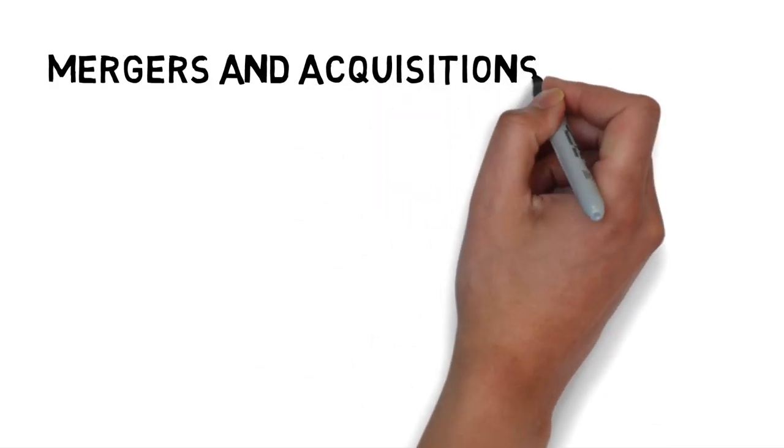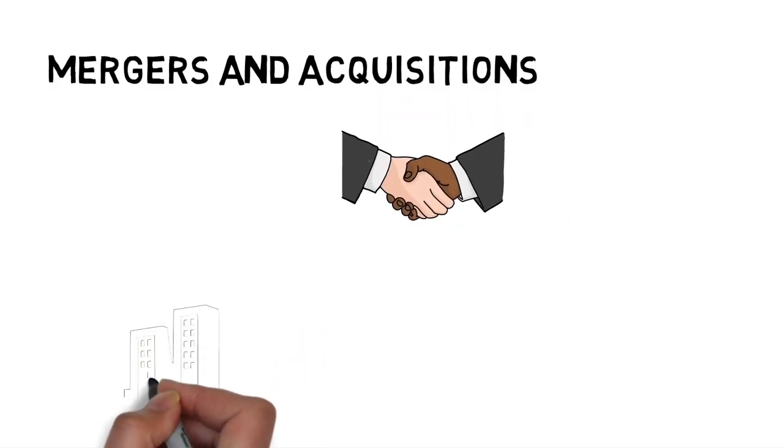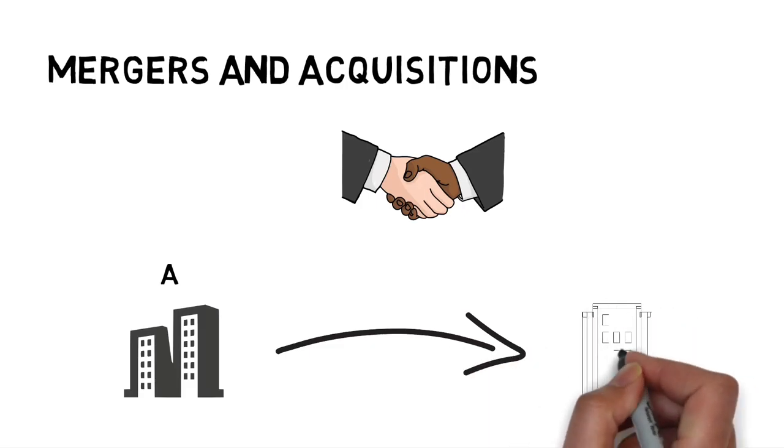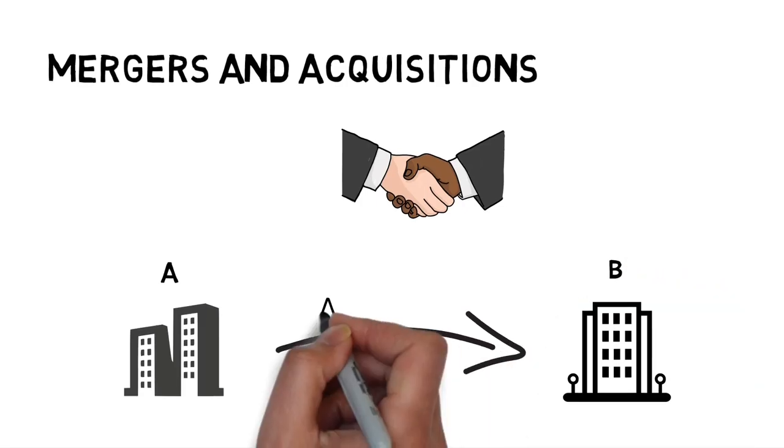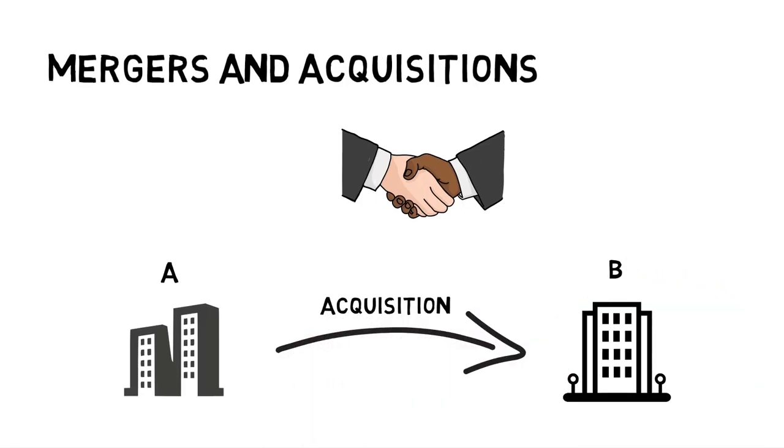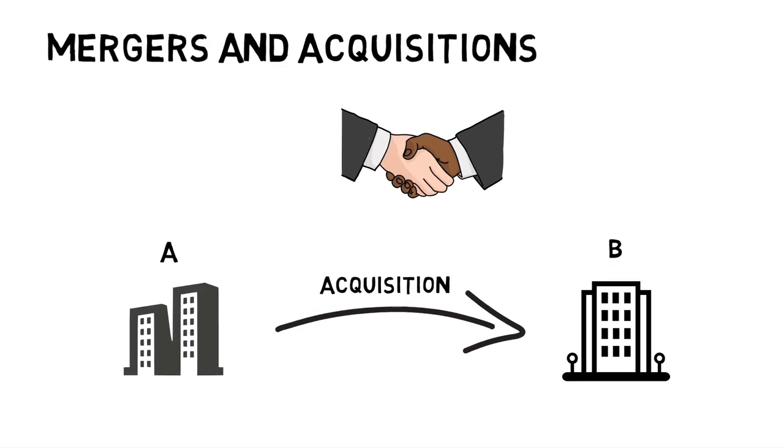The first one is mergers and acquisitions. When company A takes over or buys company B, all the assets, liabilities, debts and ownership of company B are transferred to company A. This is called an acquisition.